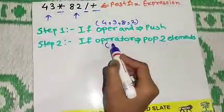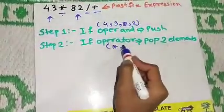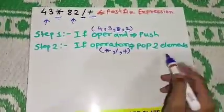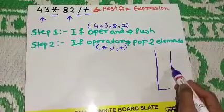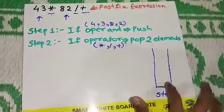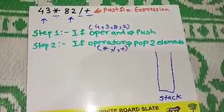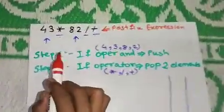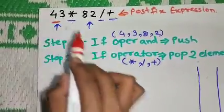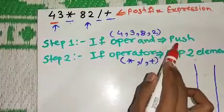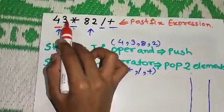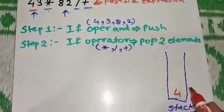First, we create a stack. Now we scan the expression. The first character is an operand, 4, so we push 4 into the stack. The next character is 3, which is also an operand, so we push 3 into the stack.